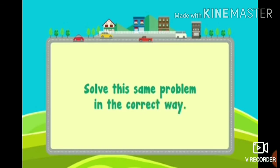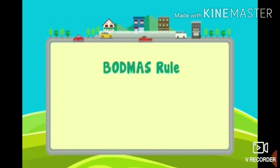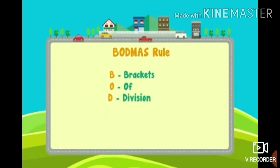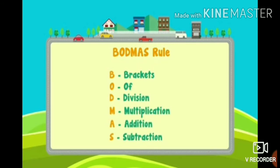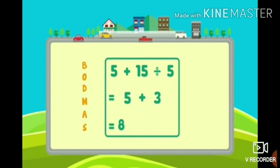What is the correct way? Use the BODMAS rule. As per BODMAS: first Brackets, next Of, then Division, then Multiplication, then Addition, then Subtraction. So first, what do we do — addition or division? Exactly, first division. So 15 divided by 5. What is 15 divided by 5? That is 3. Next, addition: 5 plus 3, that is 8. Exactly right.